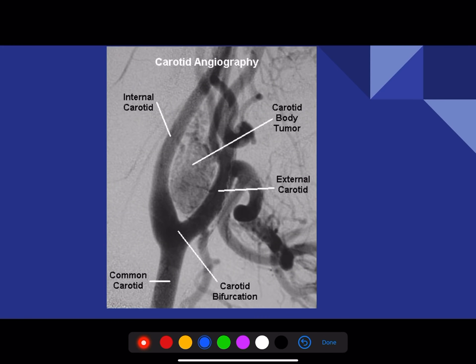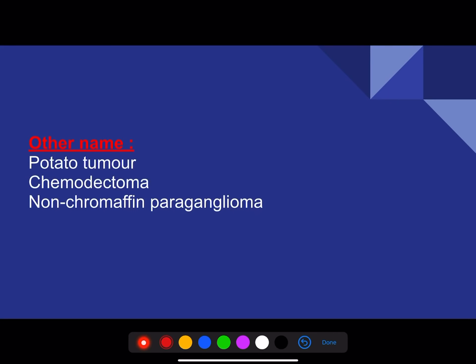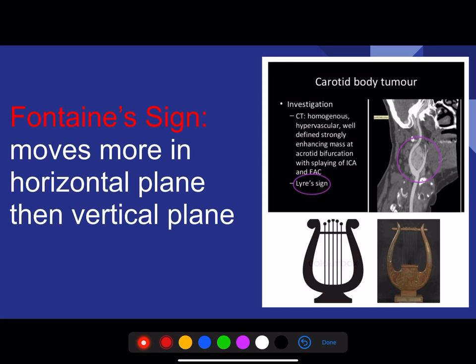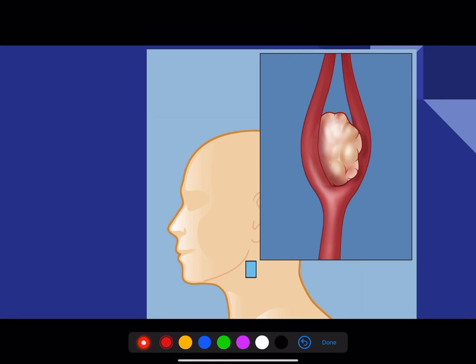This is an angiogram of the carotid body tumor, which is present between the external and internal carotid at the bifurcation — it originates at the bifurcation. Do make a note of the other names of this tumor and the signs seen, including mobility more in the horizontal plane than the vertical plane.